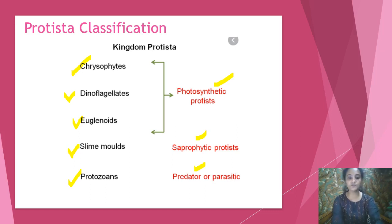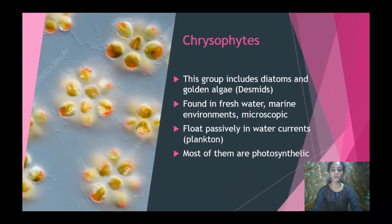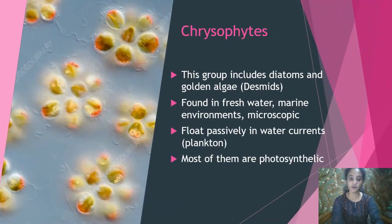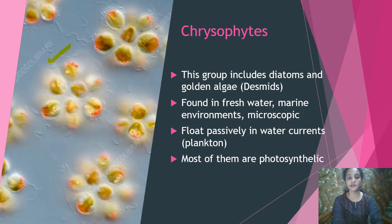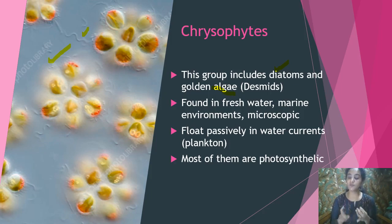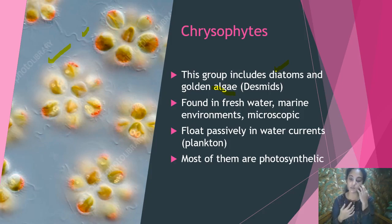Let us look at the chrysophytes group. This group mainly contains diatoms and golden algae — also called desmids. Their habitat is fresh water or marine environments, and they are all microscopic, meaning you cannot see them with the naked eye. They float passively in water currents and are called plankton. Most of them are photosynthetic.